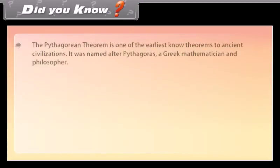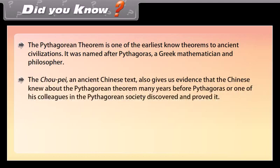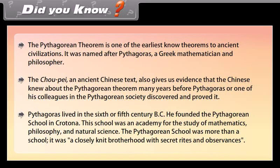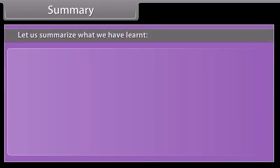Did you know: The Pythagorean theorem is one of the earliest known theorems to ancient civilizations. It was named after Pythagoras, a Greek mathematician and philosopher. The Chaopei, an ancient Chinese text, also gives us evidence that the Chinese knew about the Pythagorean theorem many years before Pythagoras or one of his colleagues in the Pythagorean society discovered and proved it. Pythagoras lived in the 6th or 5th century BC. He founded the Pythagorean school in Crotona, an academy for the study of mathematics, philosophy, and natural science. The Pythagorean school was more than a school; it was a closely knit brotherhood with secret rites and observances.